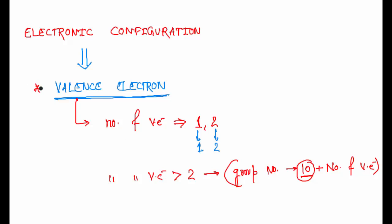To summarize: first write the electronic configuration, then find the valence electrons. If it is 1 or 2, your group will be 1 or 2 respectively. If your valence electrons are greater than 2, your group number will be 10 plus the number of valence electrons.